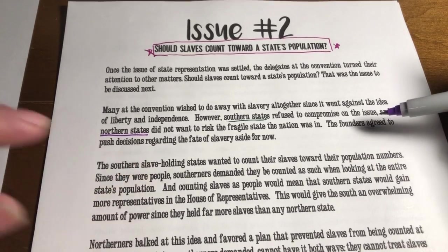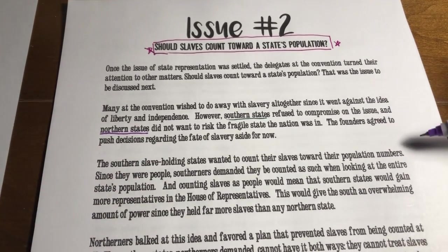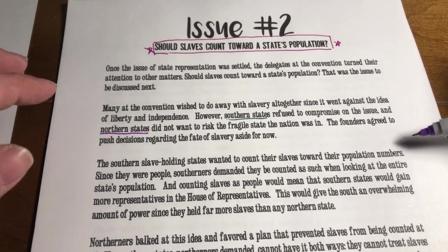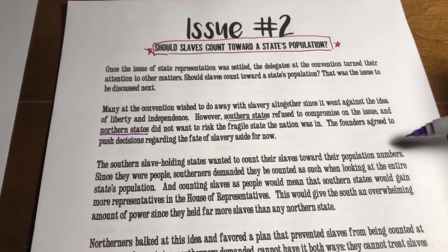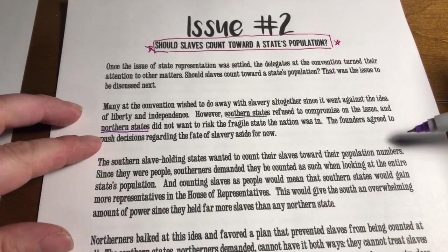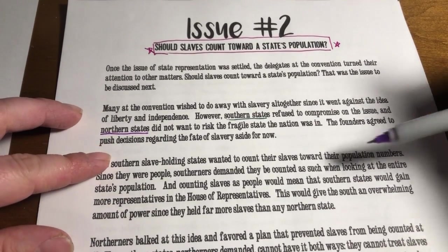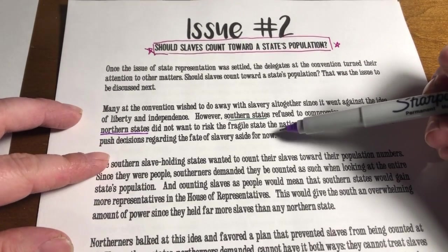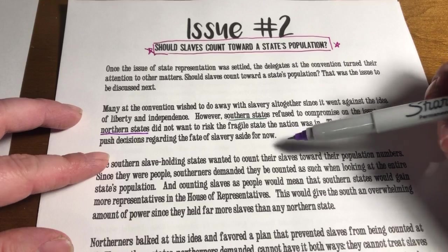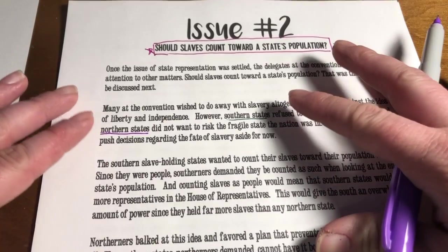They were thinking: if we try to get rid of slavery now, we may not even be able to stay a country. The founders agreed to push decisions regarding the fate of slavery aside for now — and of course we know the Civil War is going to follow eventually.